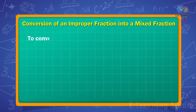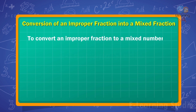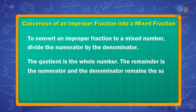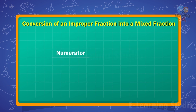Children, to convert an improper fraction to a mixed number, divide the numerator by the denominator. The quotient is the whole number, the remainder is the numerator, and the denominator remains the same as that of the improper fraction. Numerator upon denominator is equal to mixed fraction.